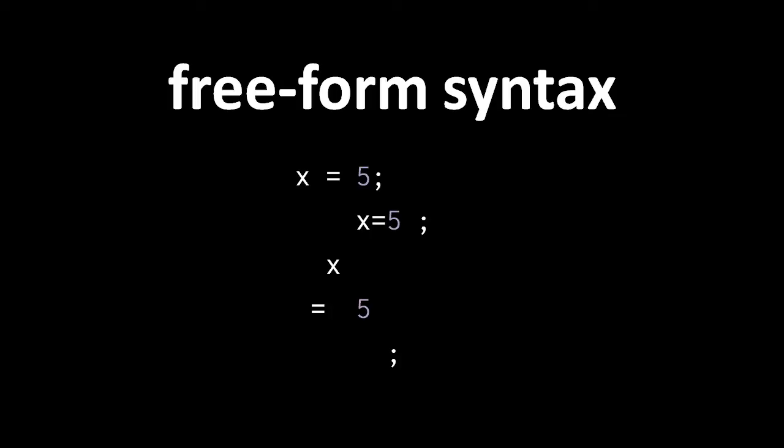For example, here we have the statement 5 assigned to x written with whitespace in three different ways. In the first example, we just stuck to a sensible style, how this statement would most commonly be written, but as you can see, we can use different spacing and write the expression across multiple lines. Even if we normally wouldn't want to write it that way, it is legal JavaScript code.